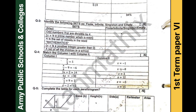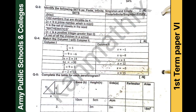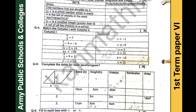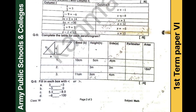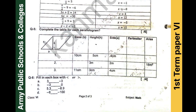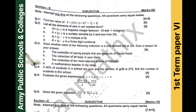Question number three: you have to identify the set as finite, infinite, singleton, or empty. This is from the sets chapter and involves identification-type questions. Question number four is from algebraic manipulation — you are assessed in a table form where a value is given and you have to find the missing one. Question number six is very simple — fill in each box with a less than or greater than sign, which is from the first chapter.